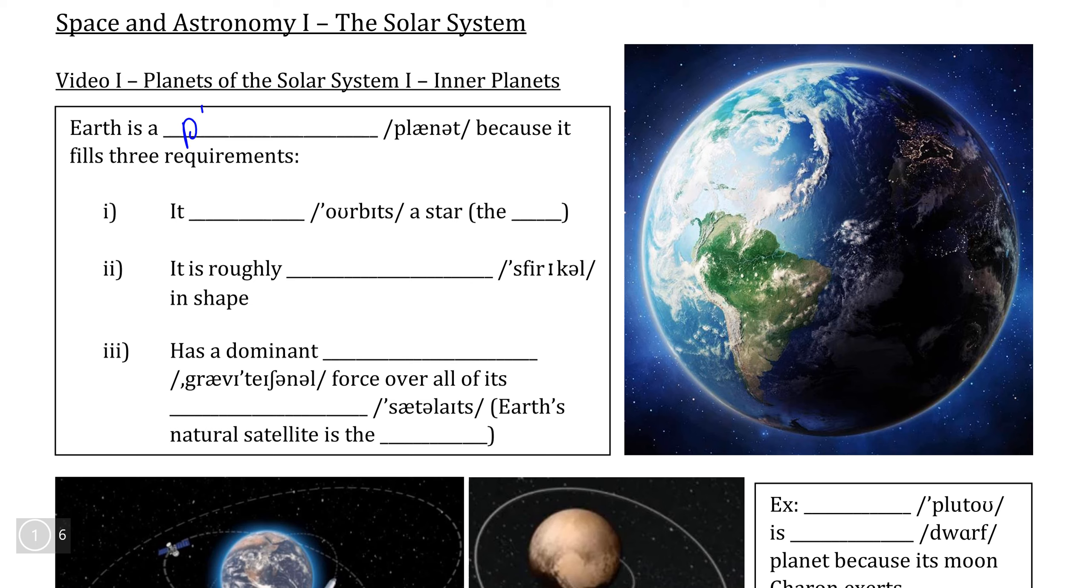In this video, we're going to be looking at the characteristics about what makes certain objects in our solar system a planet and why certain other objects do not qualify.